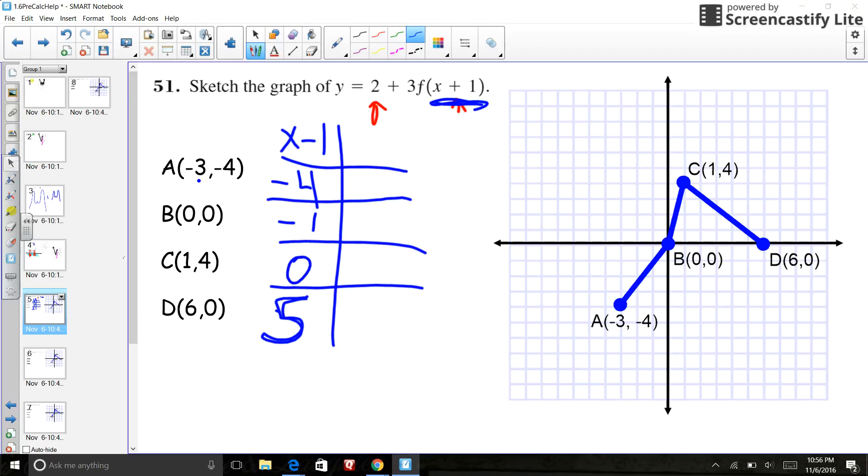And then I'm going to look at my y's, and I know what happens is this. I go 3 times my y, and then I add 2. Now that's not exactly in the order that they have right there, but what I know is that the commutative property says I can add in any order. So that's okay.